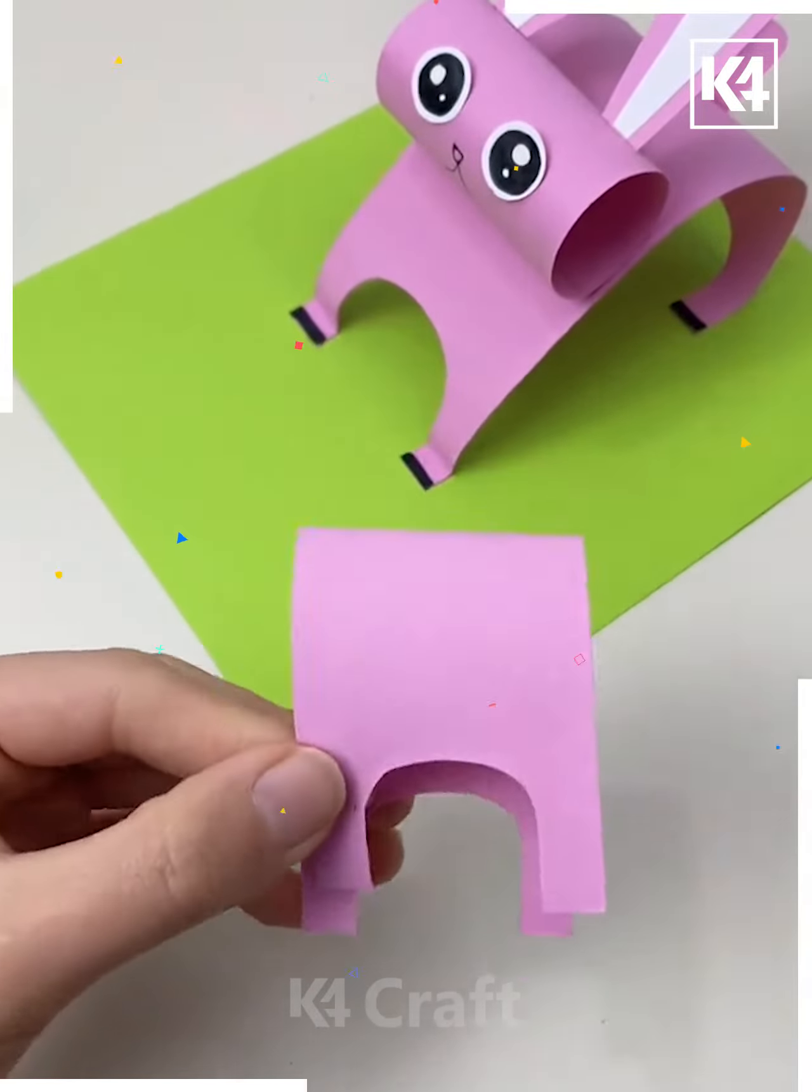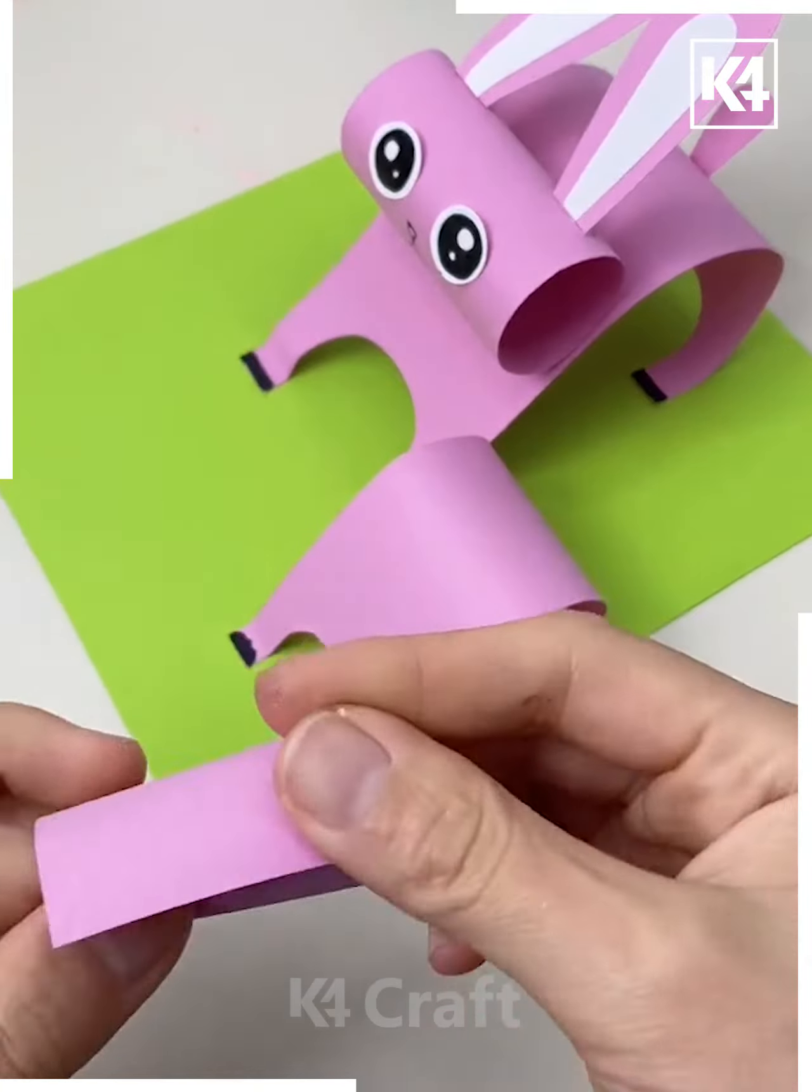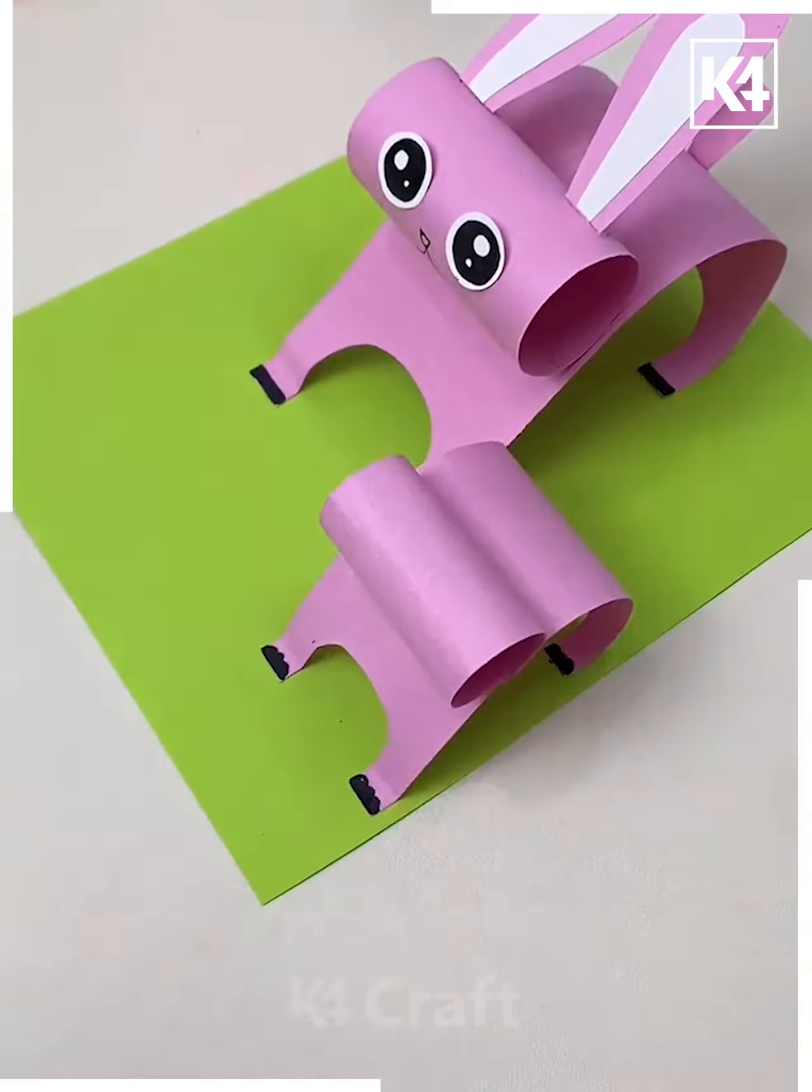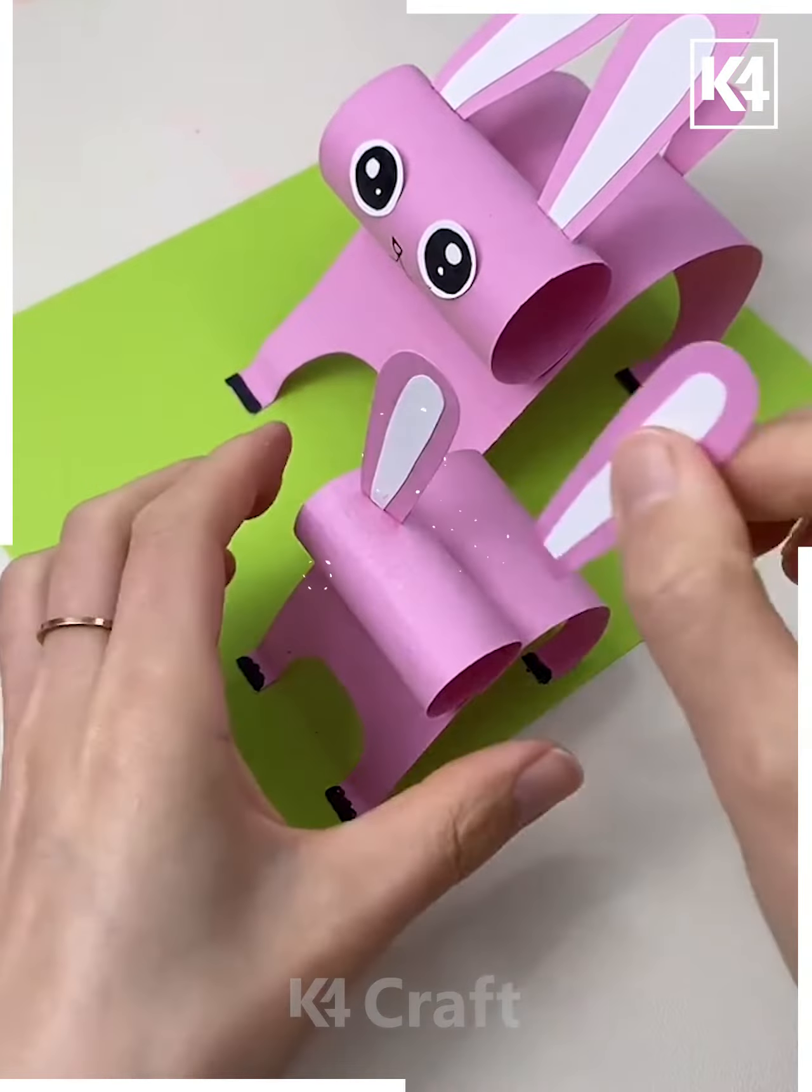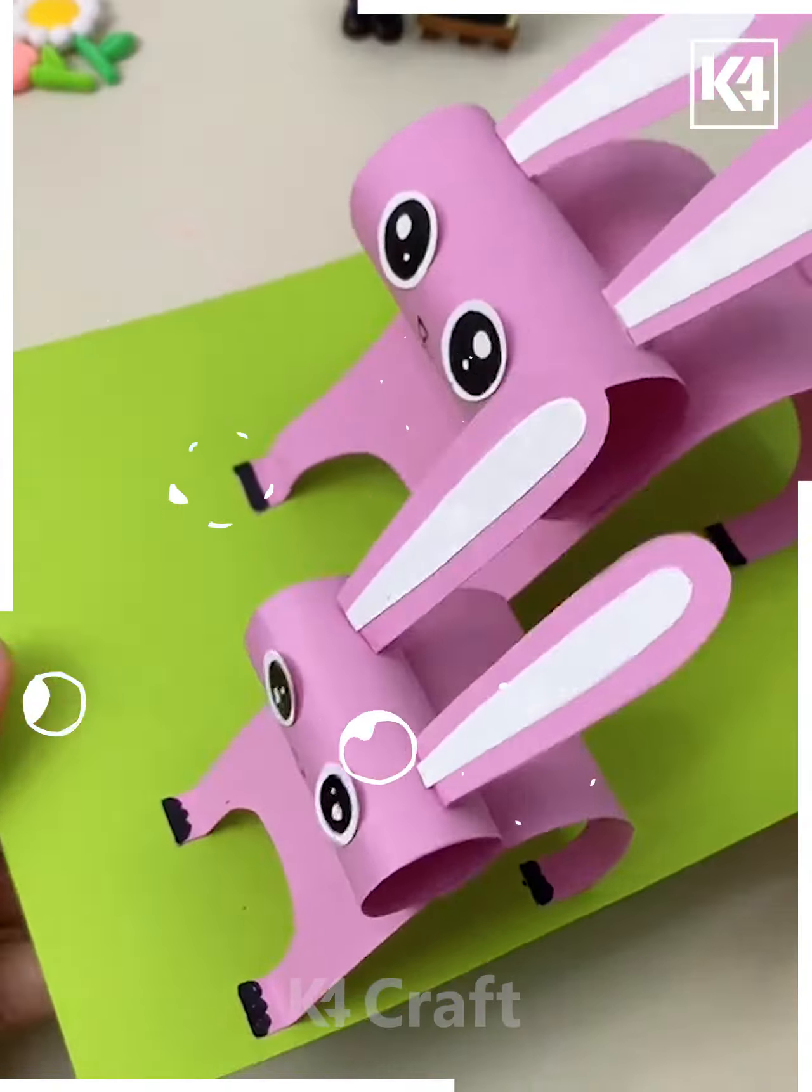Here you have to get the sheet pasted in this form. Here you have to just with the help of black marker decorate it, make the paws and then cylindrical rolls, get the ears pasted, then the tail, and then the eyes pasted in this manner. This is gonna look so beautiful.